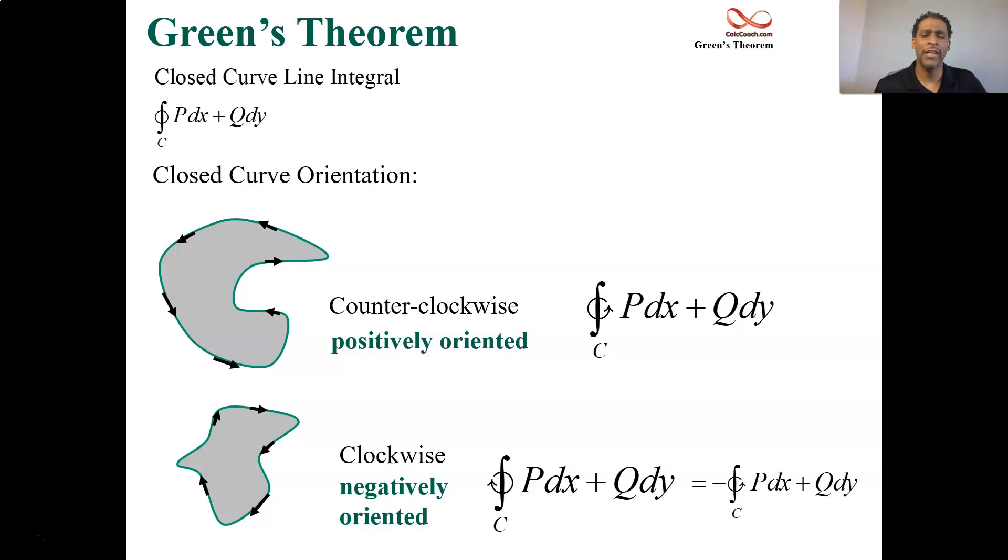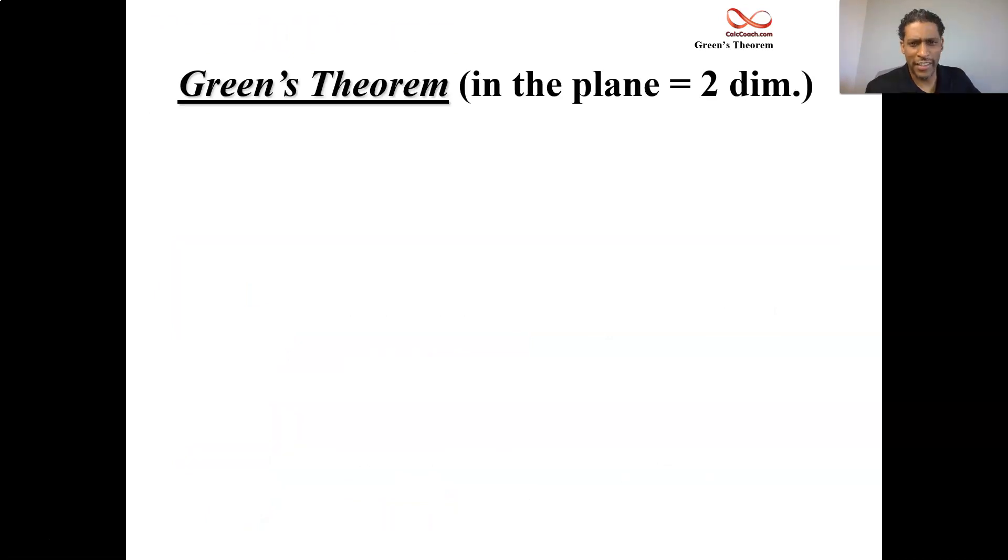Now let's discuss the actual statement of Green's Theorem. Green's Theorem in this version is built for two dimensions. There is a three dimensional version, but it's given a different name, the divergence theorem.